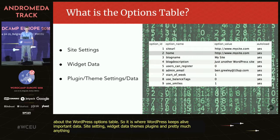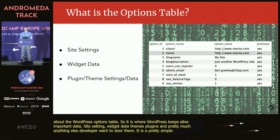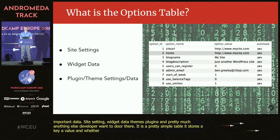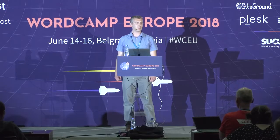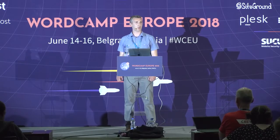It's a pretty simple table. It stores a key, a value, and whether or not to load the option in memory. Pay attention to this presentation if you develop WordPress plugins, themes, or even maintain a WordPress website.